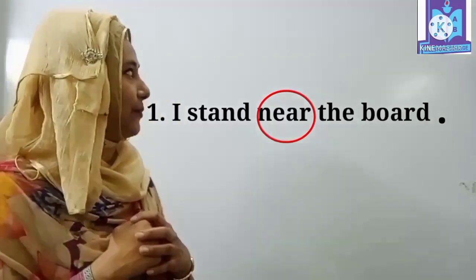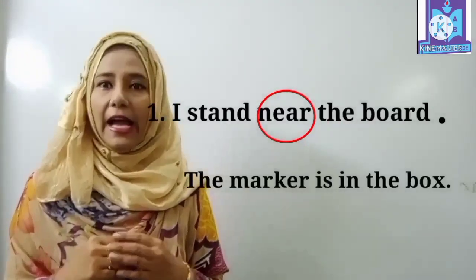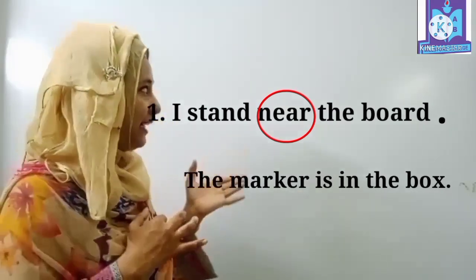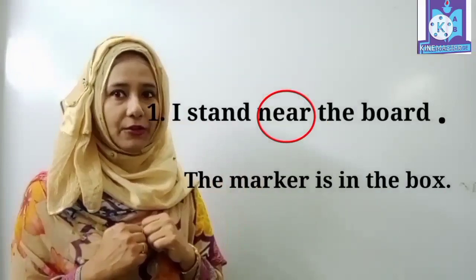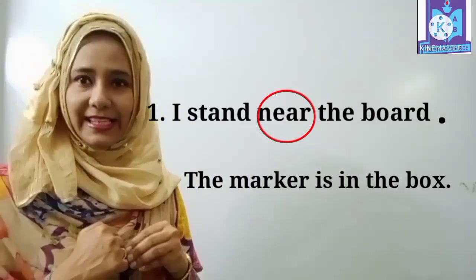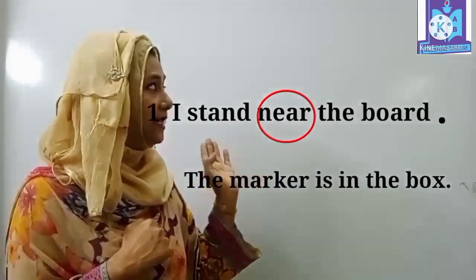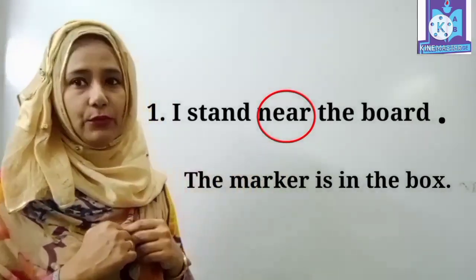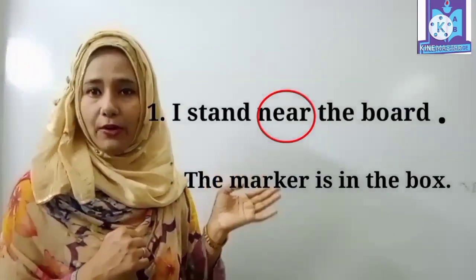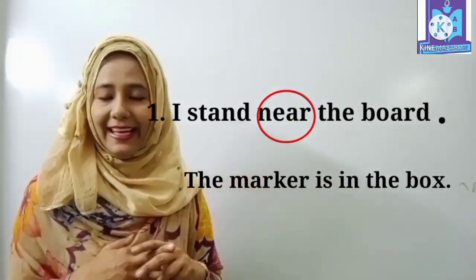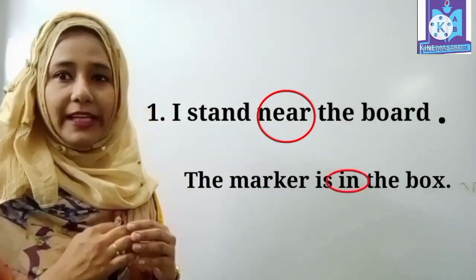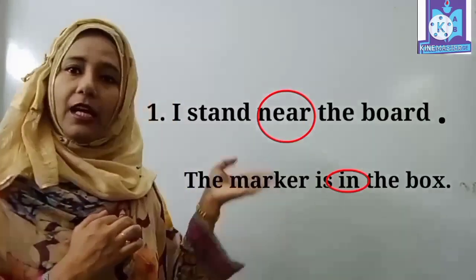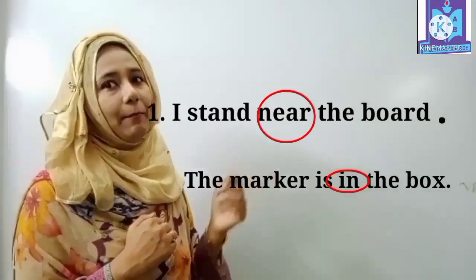Now the next sentence. I told: Where is the marker? The marker is in the box. Here, which word connects the relation between the marker and the box? Yes, 'in'. This word 'in' makes the relation between the box and the marker.